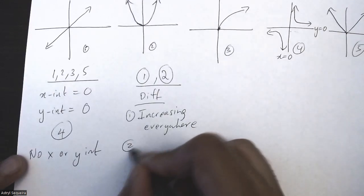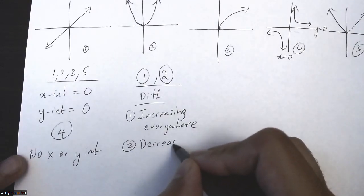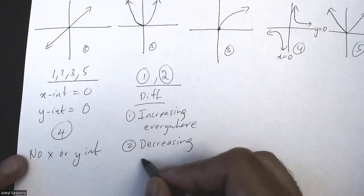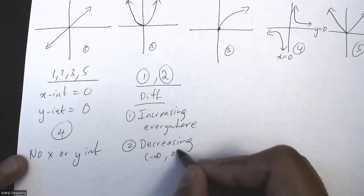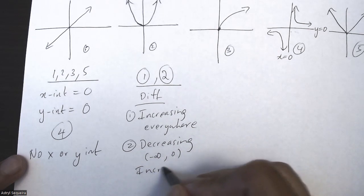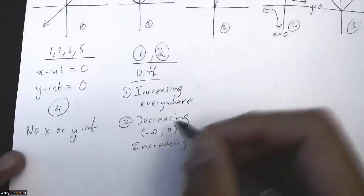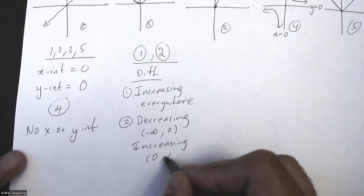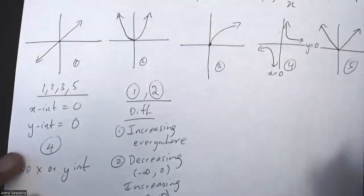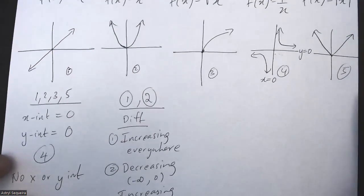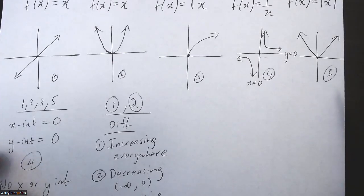So if I want to write differences over here, for this one I can say one, basically a linear function, is increasing everywhere. Whereas two, your quadratic function, is decreasing from negative infinity till zero, and then it's increasing from zero till positive infinity.